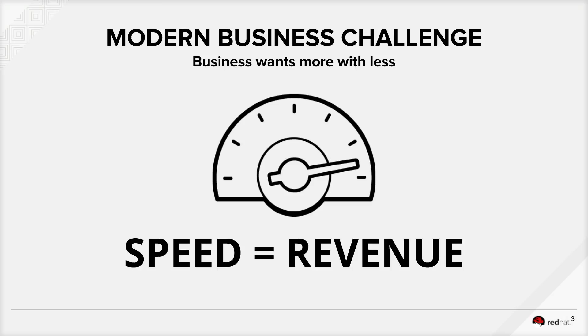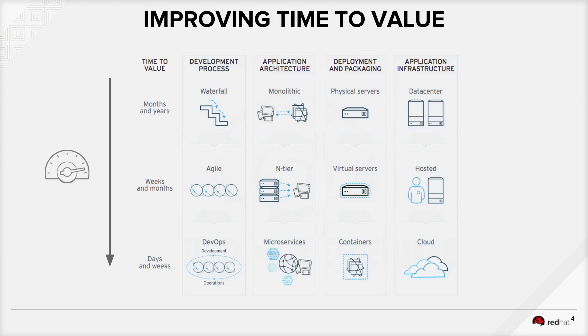Like you must have always heard about it — doing more with less. But primarily it basically means that speed is equal to revenue. So an ability to do things faster will generate more revenue for you. That's the idea. So how do you do that? Improving time to value — yes, that's the idea. And for that, they need to do faster development processes, use and adopt future-ready architecture, optimize development and packaging styles, and then eventually do a cloud adoption to save cost and achieve flexibility and agility. So this will result in lower time to value.